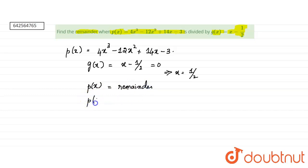So if we substitute P of 1 by 2, we get the remainder for the given equation. P of 1 by 2 is nothing but substitute X as 1 by 2.